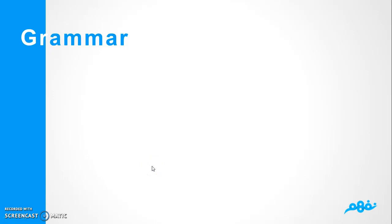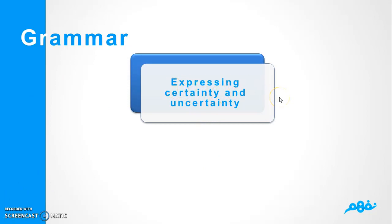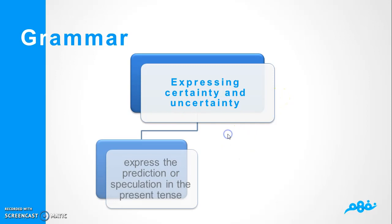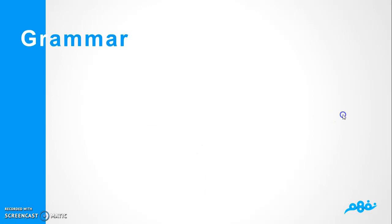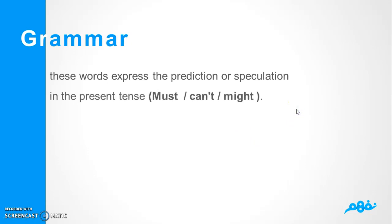And here we are, we have the most important part, that grammar. And here we have expression expressing certainty and uncertainty, that's divided in two types. The first expresses prediction or speculation in the present tense and the second expresses guessing in the past tense. How you use these words to express the prediction or speculation in the present tense?